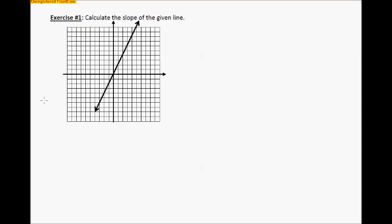Today our problems deal with calculating the slope of a line. This is very similar to what we've done before in the previous section, but today we're going to do it a little bit more mathematical. Yesterday we calculated the slope by counting on the coordinate plane from one point to another. Today we're going to use those coordinates to mathematically figure out what the slope of any line is. Usually when you are talking slope, you use an M.